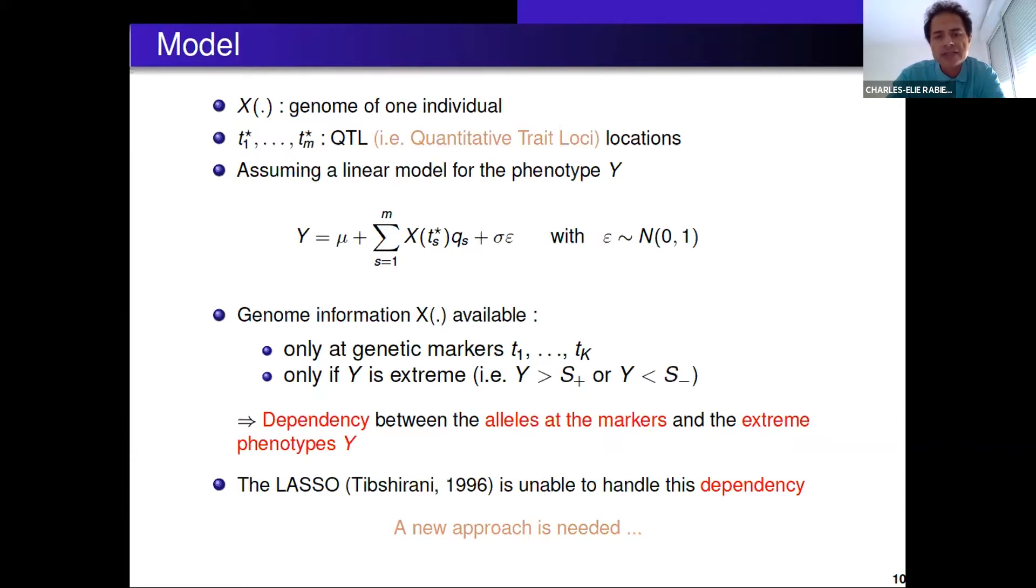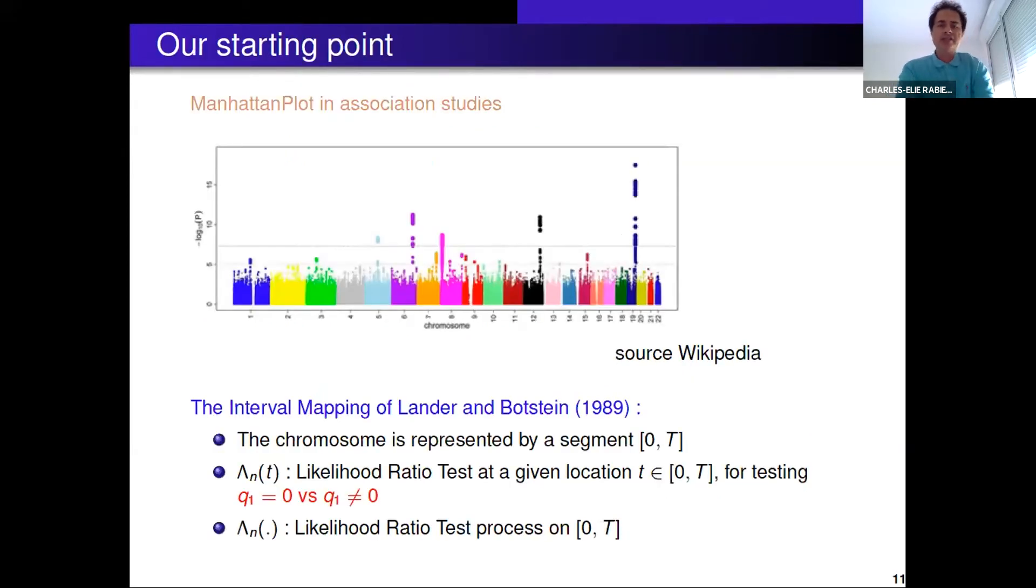The problem is that the lasso is unable to handle this dependency, and the other regularization methods also. A new approach is needed. That's why we suggested the SG no lasso. The starting point is a Manhattan plot in association studies and interval mapping, linkage of Lander-Botstein time.